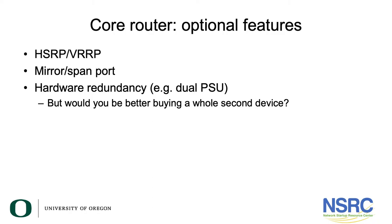Having a mirror or SPAN port is also very useful. This port allows you to duplicate traffic going through a particular user port for further inspection. It could be a denial-of-service attack or some other malicious activity on the network that you want to investigate more closely, without actually disrupting the traffic flow between end systems.